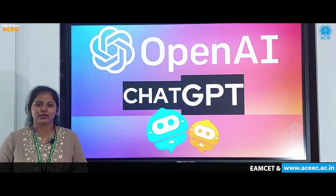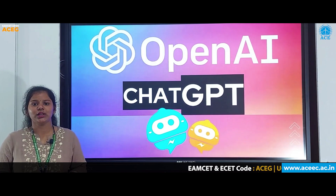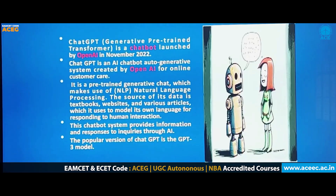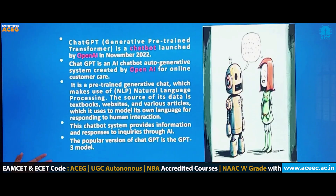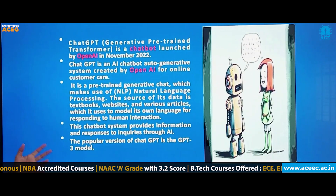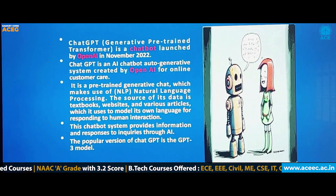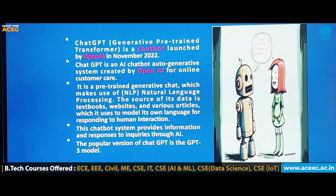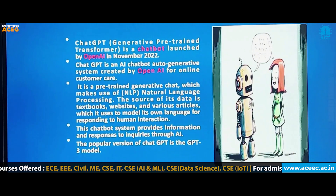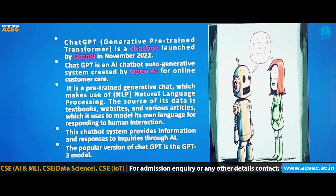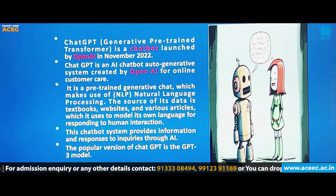We all have heard about the search engines Yahoo, Google and Firefox. What is ChatGPT? In ChatGPT, GPT stands for Generative Pre-trained Transformer. It is a chatbot launched by OpenAI in November 2022. ChatGPT is an AI chatbot auto-generative system created by OpenAI for online customer care. It is a pre-trained generative chat which makes use of NLP, which is Natural Language Processing.